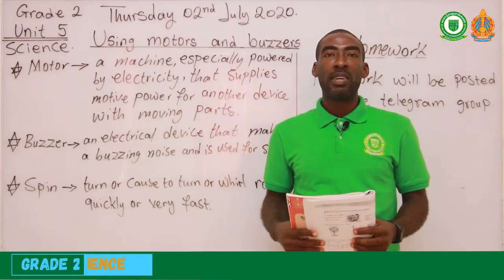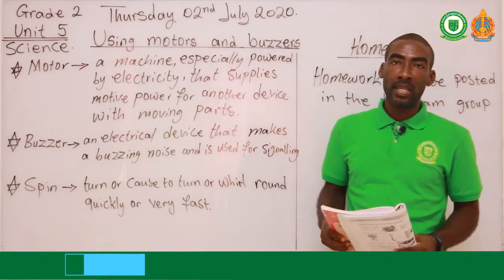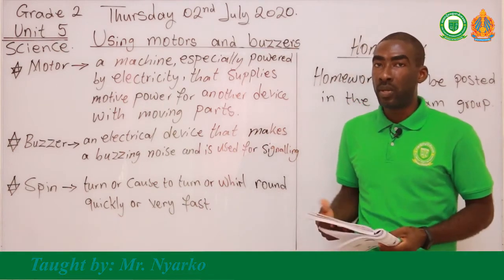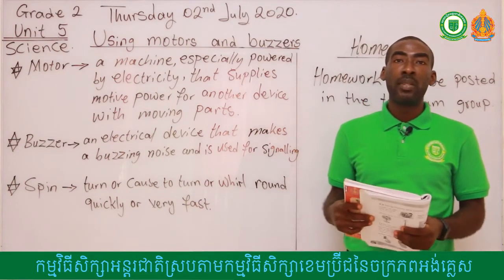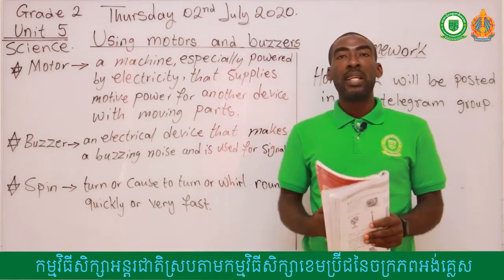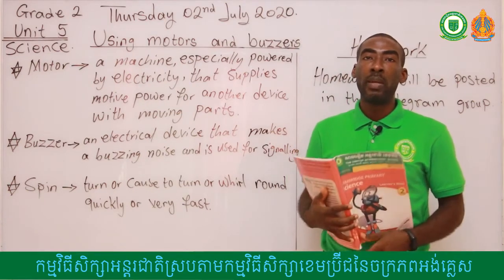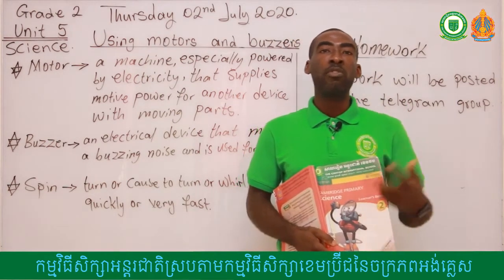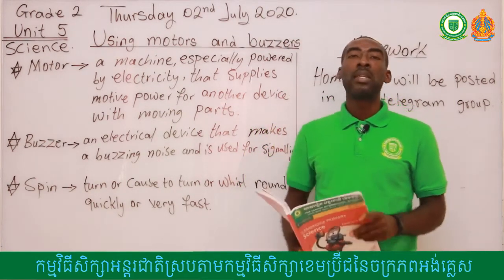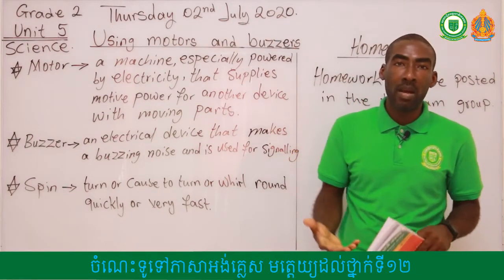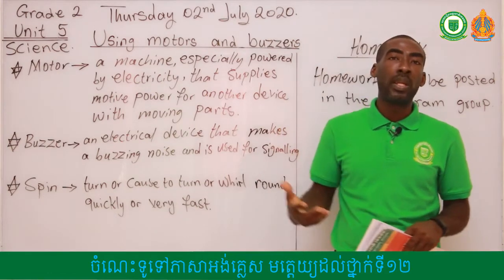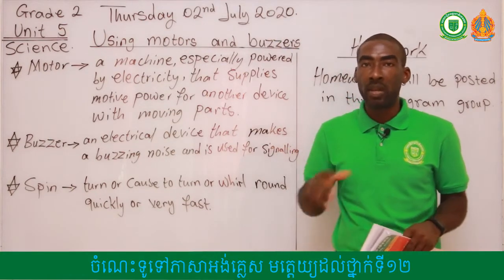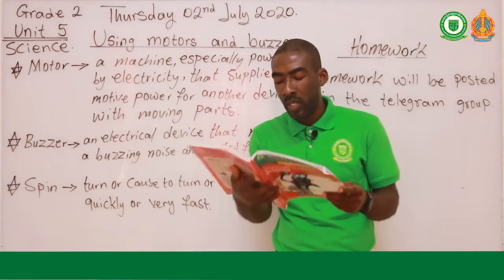Hello students, this is our last video on our lesson using motors and buzzers, which is a sub-topic under electricity. In today's lesson we have studied the difference between a buzzer and a motor. We know that motors make a turn, or make things spin around, or make movement, whereas buzzers are components that make sound. We also learned about spin — spin means something that is going round in a circular form.